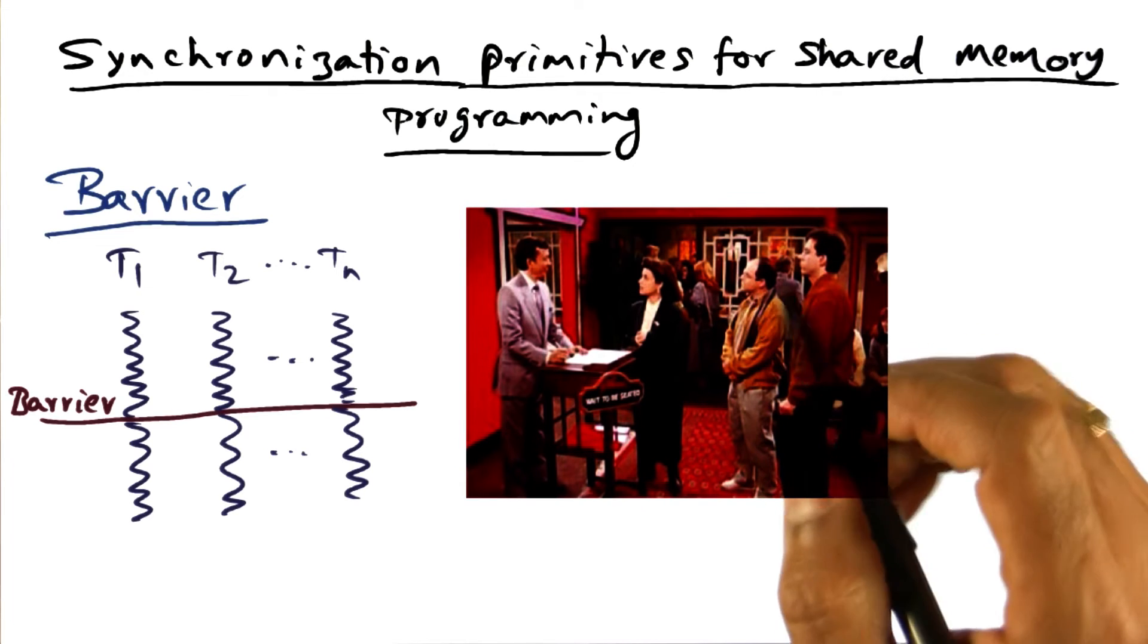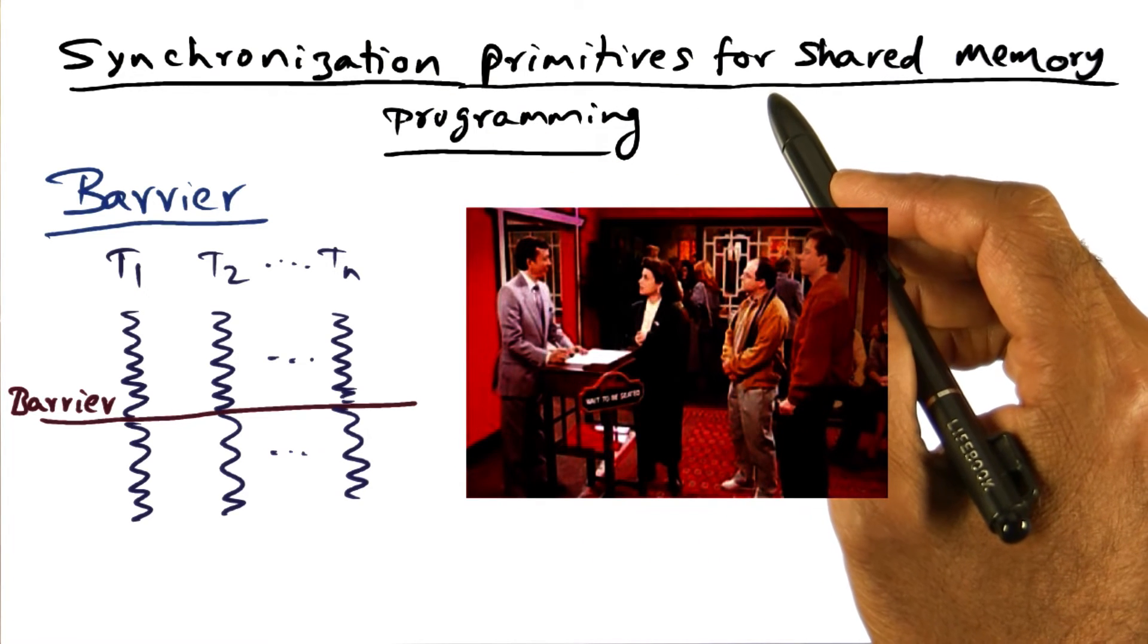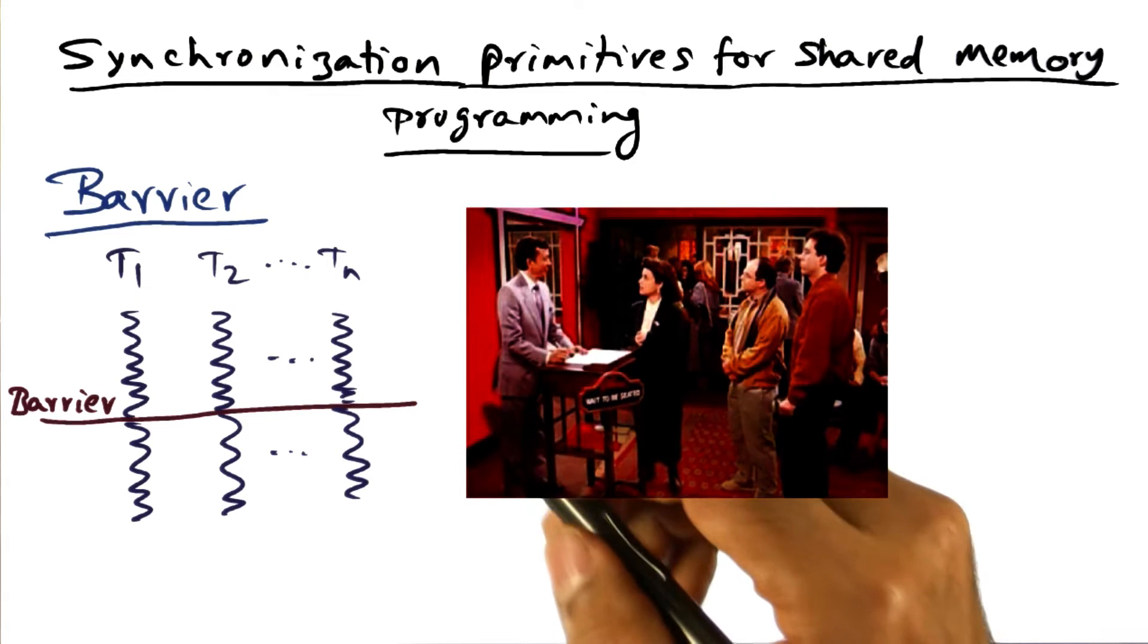So we looked at two types of synchronization primitives. One is the lock, and the other is the barrier synchronization.